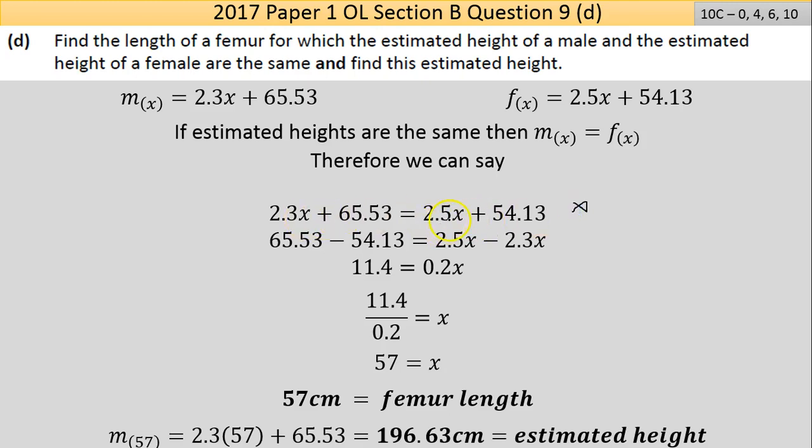There's only one unknown, the x value, so I'm going to solve for x. Bringing all numbers to one side and all x terms to the other: 65.53 - 54.13 = 2.5x - 2.3x. This gives 11.4 = 0.2x. Bringing the 0.2 across, dividing, I get 57. So 57 centimeters is the femur length.